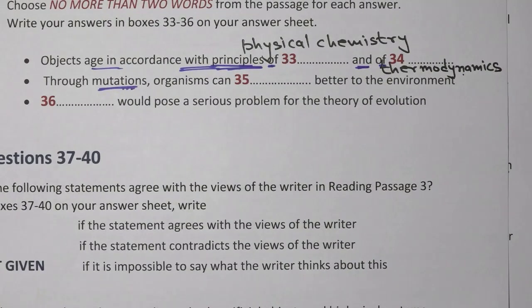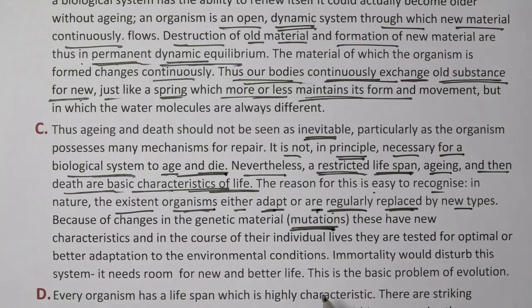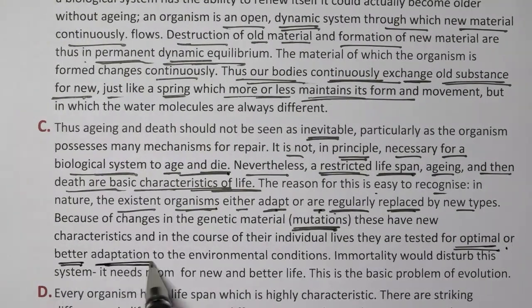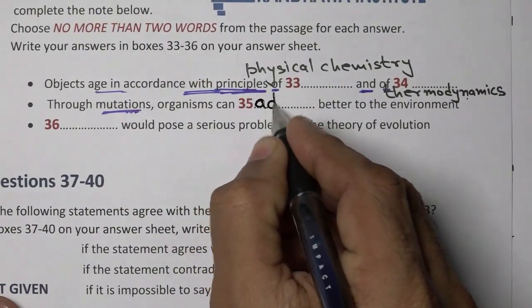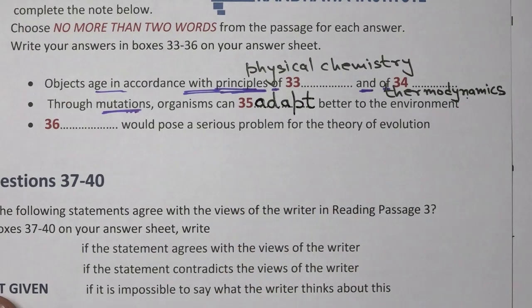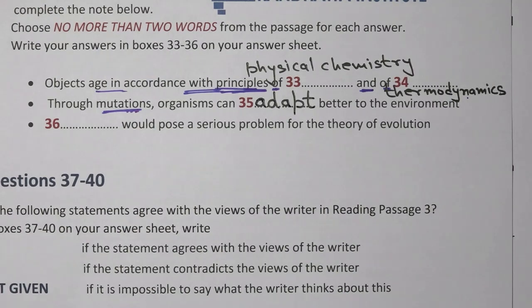Question 35: organisms can dash better to the environment. Like mutations, these have new characteristics, and in the course of their individual lives they are tested for optimal or better adaptation to environmental conditions. The answer for question 35 comes out to be 'adapt' — the verb for adaptation is adapt. Adaptation is not the right answer; the correct verb form is 'adapt'.